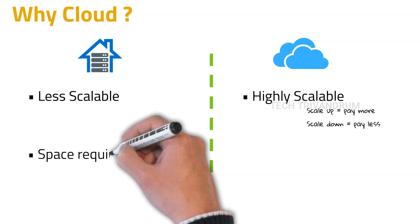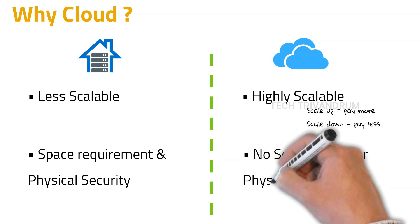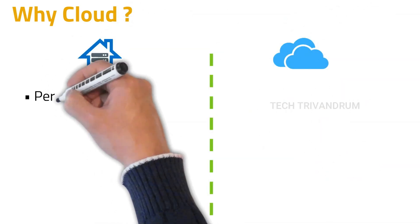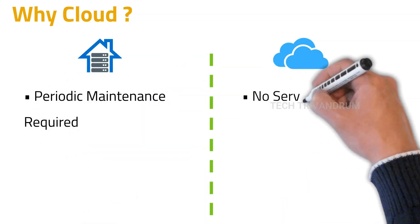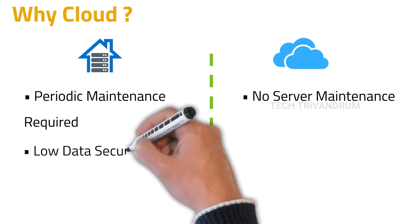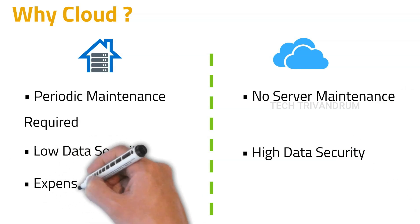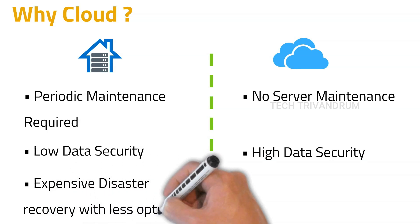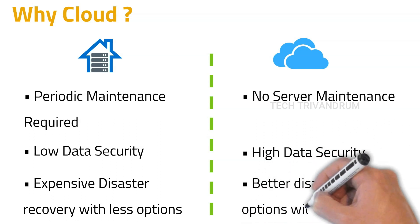Regarding physical space requirements, in the on-premises setup, it is very high and requires physical security. But on the cloud, there is no space required and we don't need to worry about the physical security of the server. On the on-premises setup, we need to provide periodic maintenance, which itself is an expenditure. But on the cloud, there is no need for any periodic maintenance on our side. There is low data security on on-premises when compared to the cloud environment. On cloud, we can set up comparatively high security for our data. And disaster recovery options are very low and very expensive on on-premises, but on the cloud there are a number of disaster recovery and data redundancy options with lesser cost.